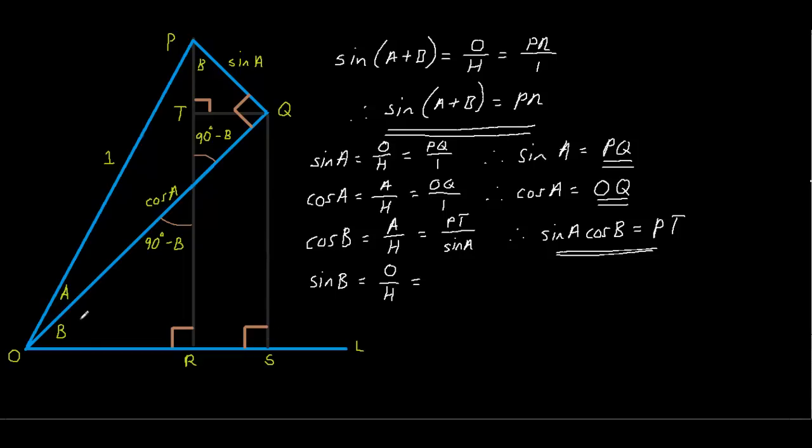You can see that the angle here is B. Now, the opposite of the triangle OQS is QS. So we'll put QS here. And its hypotenuse is cos A. So we're going to put cos A over here. Now, if we multiply this fraction by cos A, we also have to multiply sin B by cos A. Therefore, we get cos A times sin B equals QS.